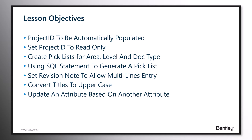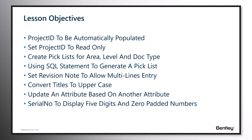We will also learn how an attribute can be automatically updated based on another attribute. Finally, we will learn how to set up the serial number to display a five-digit number and also prepend it with zeros.